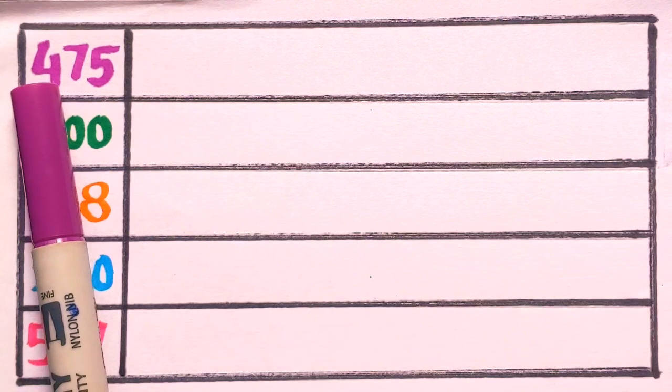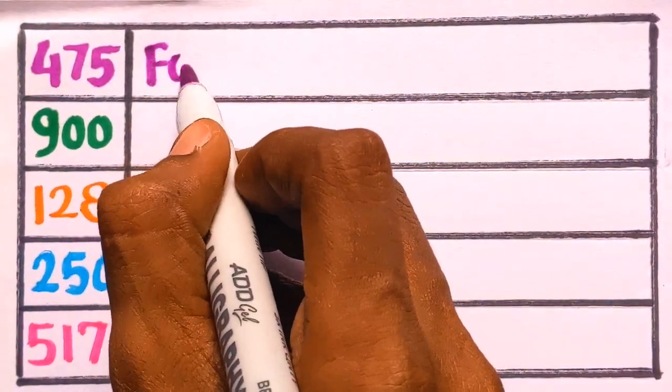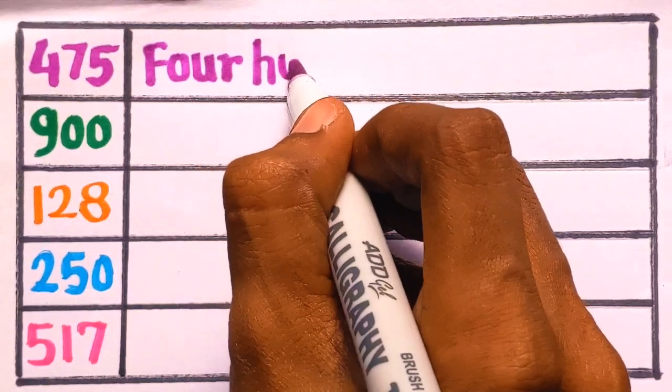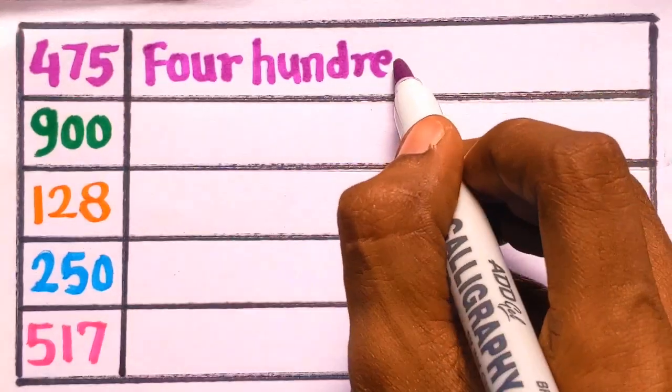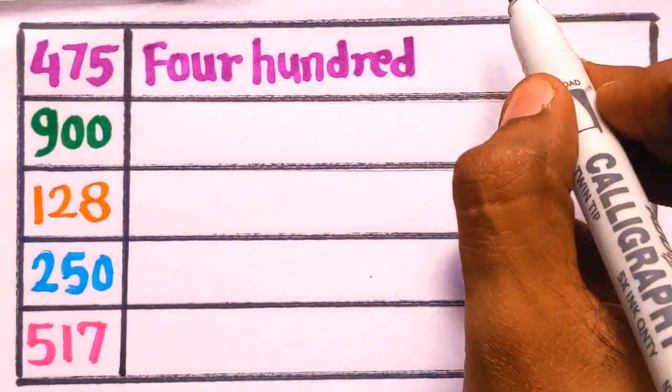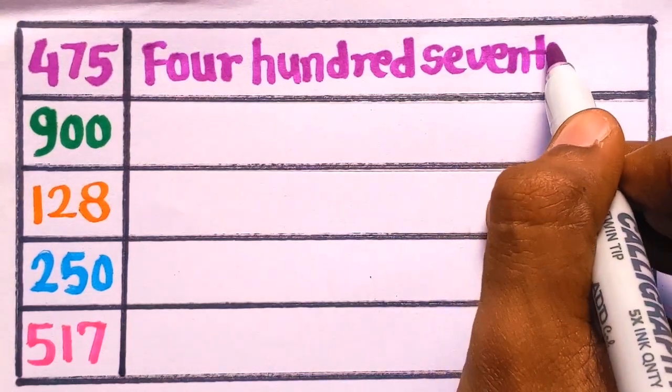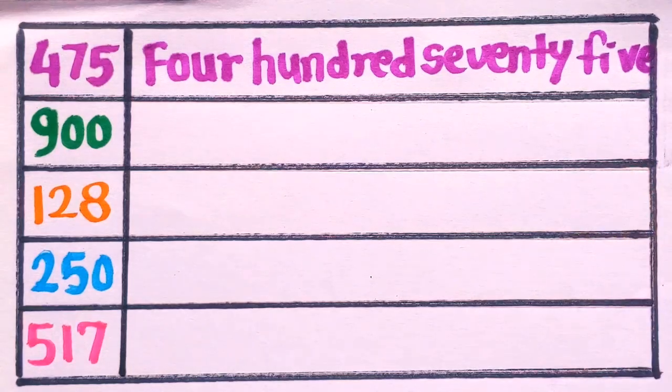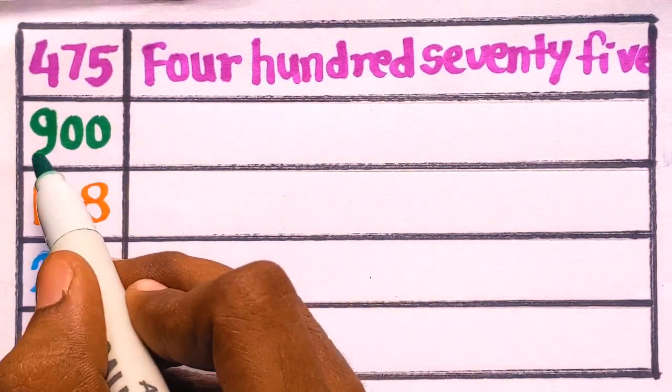At first, 475. 475 is four hundred seventy five. F-O-U-R hundred, H-U-N-D-R-E-D, S-E-V-E-N-T-Y, F-I-V-E. 475.